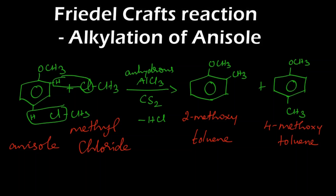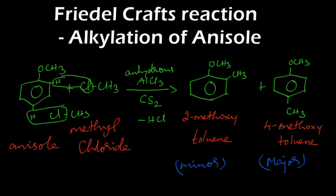The major product is the para isomer and the minor product is the ortho isomer. To summarize: when anisole reacts with methyl chloride in the presence of anhydrous aluminum chloride and carbon disulfide, we get a mixture of 2-methoxy toluene and 4-methoxy toluene, and the major product is 4-methoxy toluene.